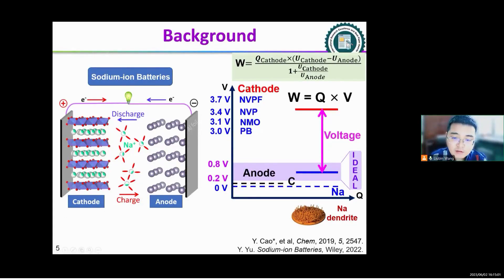Typically, the energy density of a battery capacity depends on the capacity and voltage of the cathode and anode.